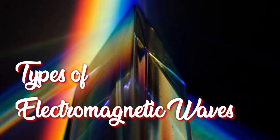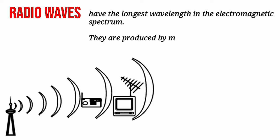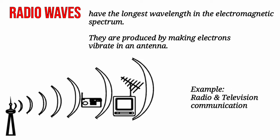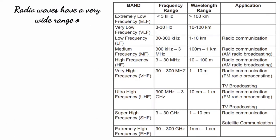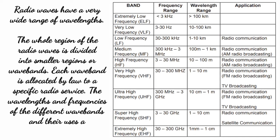Now let's discuss further the wavelengths and frequencies of the seven types of electromagnetic waves in the electromagnetic spectrum. Let's start with radio waves, which has the longest wavelength in the electromagnetic spectrum. They are produced by making electrons vibrate in an antenna. One wavelength is compared to the size of a football field. Radio waves have a very wide range of wavelengths. The whole region of radio waves is divided into smaller regions or wave bands. Each wave band is allocated by law to a specific radio service. The wavelengths and frequencies of the different wave bands and their uses are shown in the table.